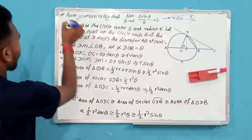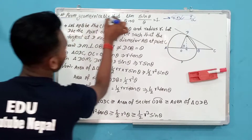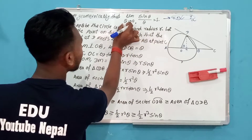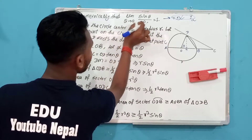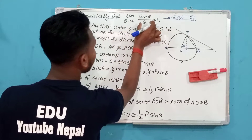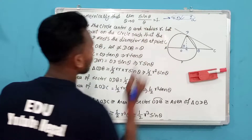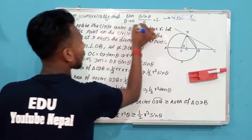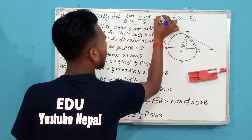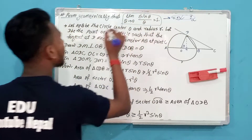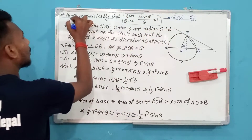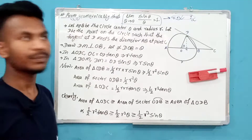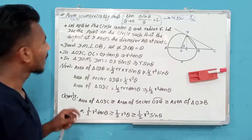Prove geometrically that limit as theta tends to 0 of sin theta divided by theta is equal to 1. We need to prove this using geometry — this is a geometrical proof.